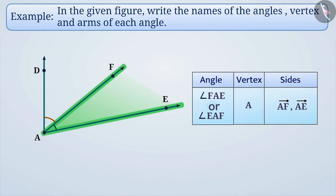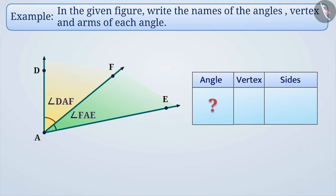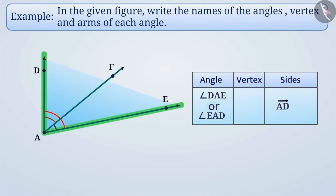This figure has another angle. Can you find an angle other than angle DAF and angle FAE in this figure? Absolutely correct. The third angle in this figure is angle DAE or angle EAD. The arms and sides of this angle are ray AD and ray AE, and the vertex is point A.